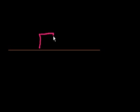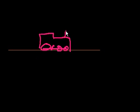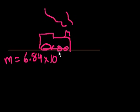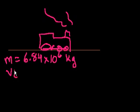Let me draw. This is going to be the ground. The problem says I have a train — I'll try my best to draw a train. The train has a mass of 6.84 times 10 to the sixth kilograms, and it's moving at a speed of 80 kilometers per hour. We'll call that its initial velocity, because the problem is going to ask what happens to that velocity.